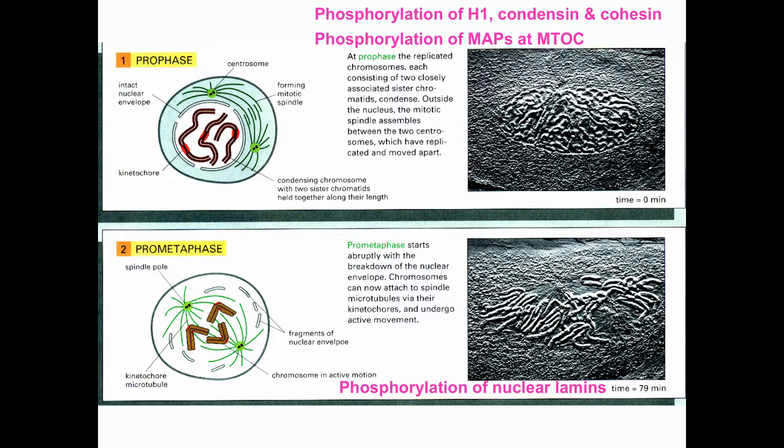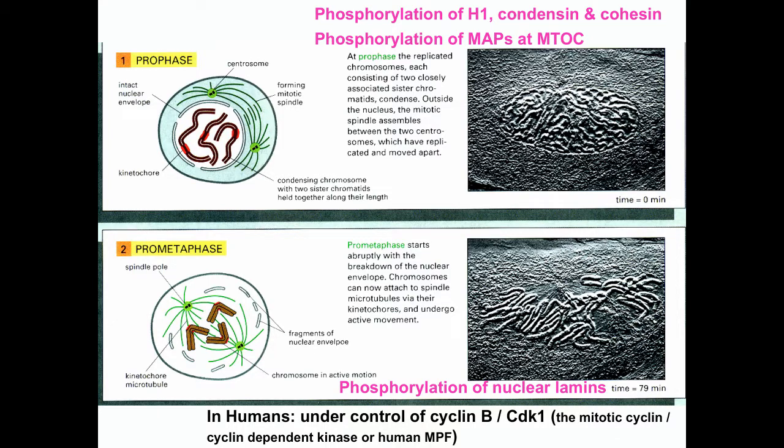Once the nuclear envelope is broken down, chromosomes can now attach to spindle microtubules by their kinetochores and begin to undergo very active movement. In humans, progression from prophase through prometaphase is under the control of cyclin B-CDK1, the so-called mitotic cyclin-dependent kinase, or in historic terms, human MPF.